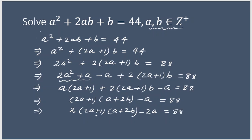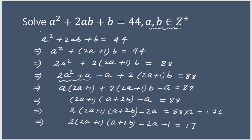To get (2a + 1) as a common factor here so that it can be taken common, I can subtract 1 from both sides. Since I multiplied by 2 it becomes 176, so I write: 2(2a + 1)(2a + 2b) − (2a + 1) = 175. So (2a + 1)(2a + 2b − 1) = 175, let me rewrite clearly: (2a + 1)(2a + 4b − 1) = 175.